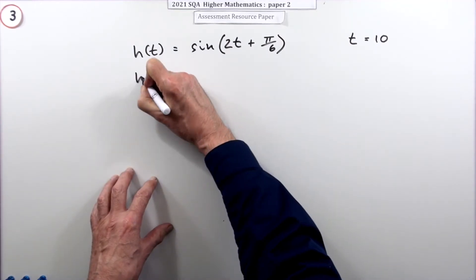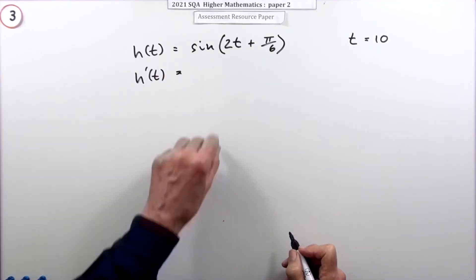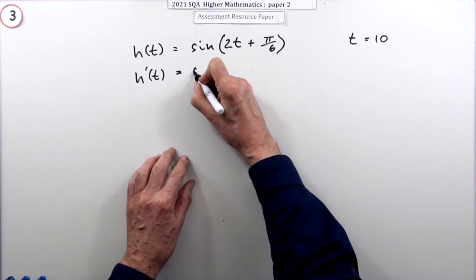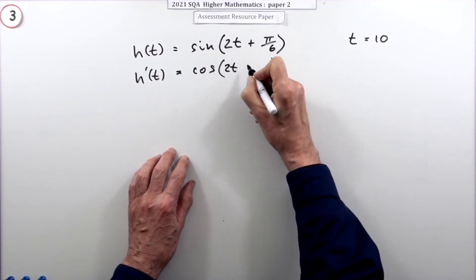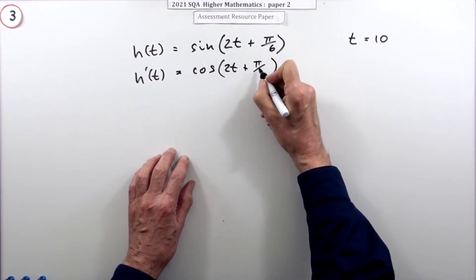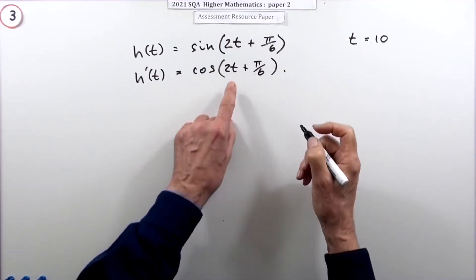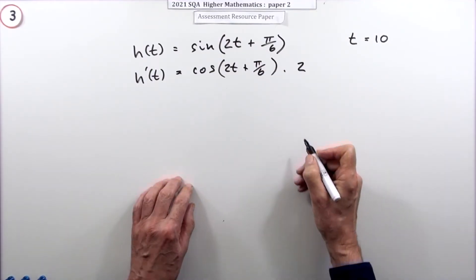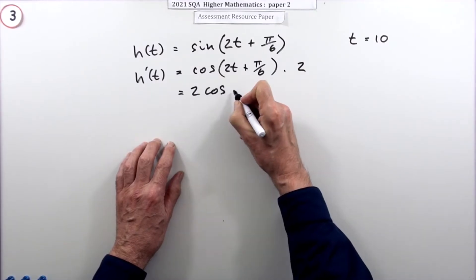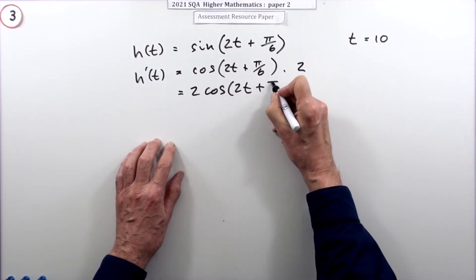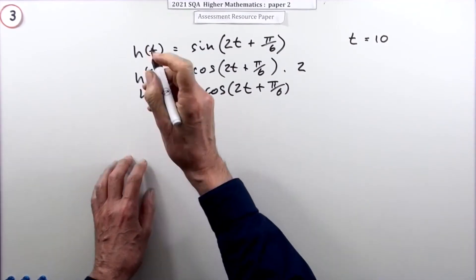The rate of change is the derivative, so we differentiate. The outside first: sine goes to cosine of whatever is inside — in this case 2t + π/6 — multiplied by the inner derivative, which is 2. So the rate of change is h'(t) = 2cos(2t + π/6).